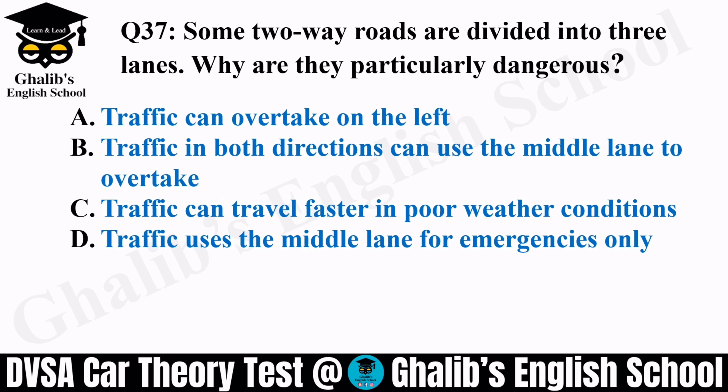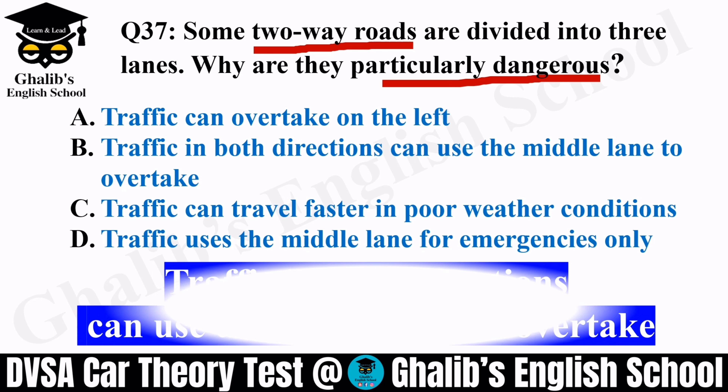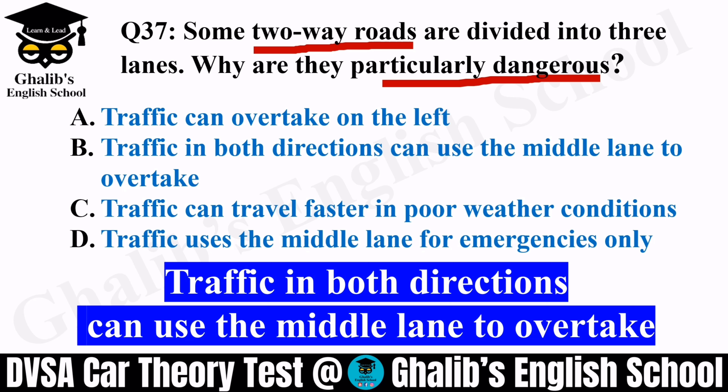Question 37. Some two-way roads are divided into three lanes. Why are they particularly dangerous? Options: traffic can overtake on the left, traffic in both directions can use the middle lane to overtake, traffic can travel faster in poor weather conditions, or the middle lane is for emergencies only. They are dangerous because traffic in both directions can use the middle lane to overtake.